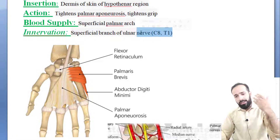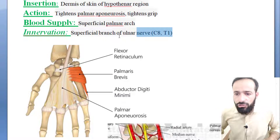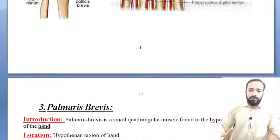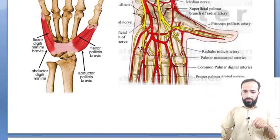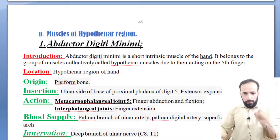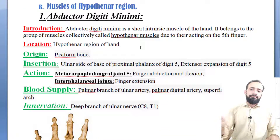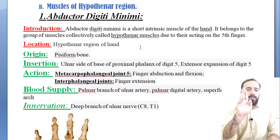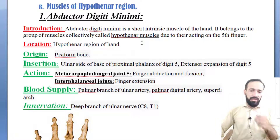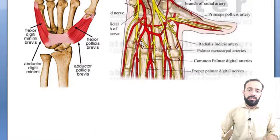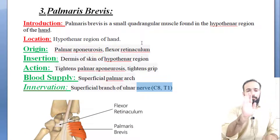Palmaris brevis is innervated by the superficial branch of the ulnar nerve, which arises from spinal levels C8 and T1. So in the hypothenar region, we have discussed abductor digiti minimi, flexor digiti minimi brevis, and palmaris brevis.